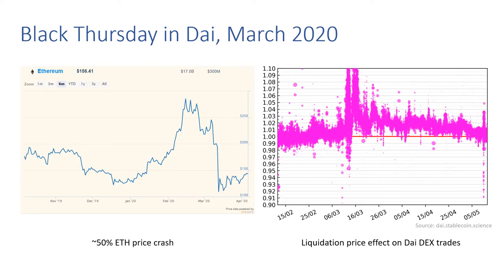This was directly witnessed on Black Thursday in DAI in March 2020. ETH experienced a 50% drop, which triggered a large liquidation price effect on the DAI market, causing the price of DAI to increase well over $1.10 — despite the system being in an emergency setting — as well as inducing markedly higher volatility in the DAI price at that time.